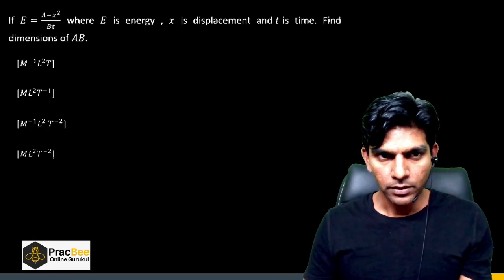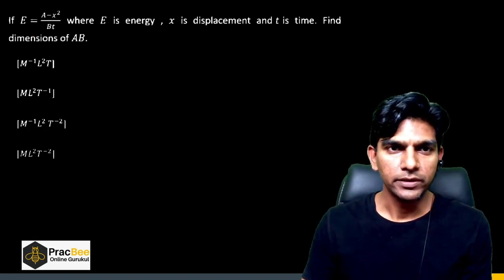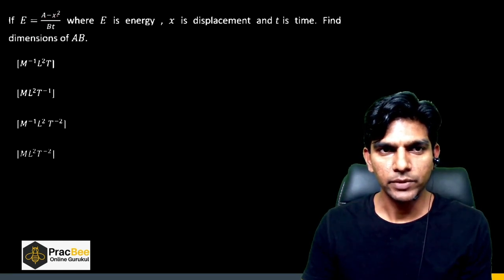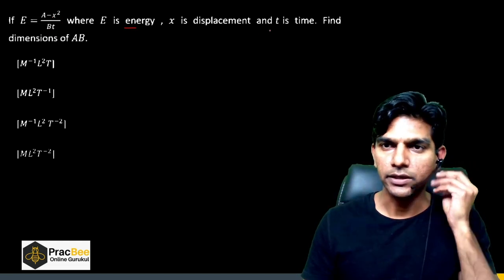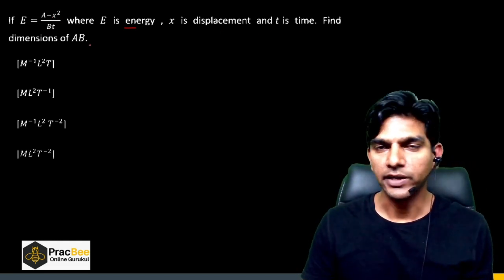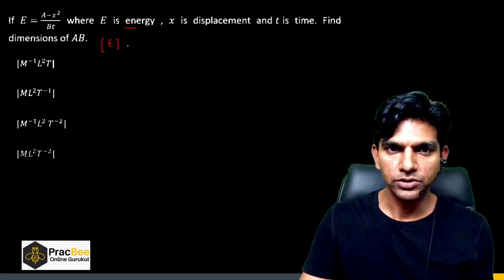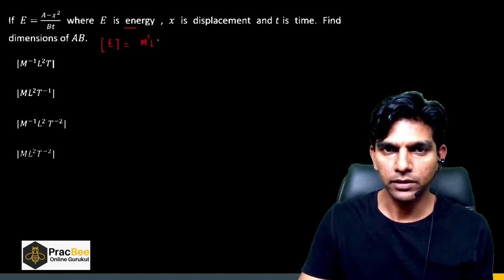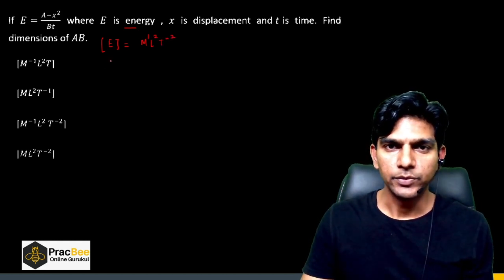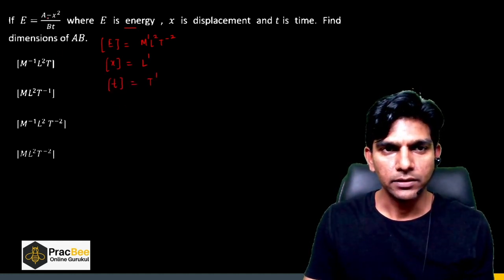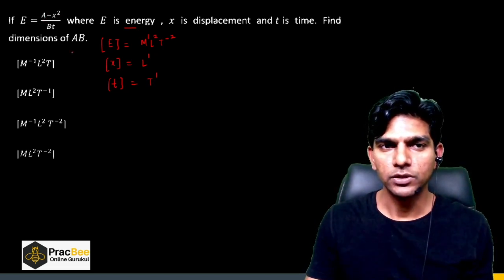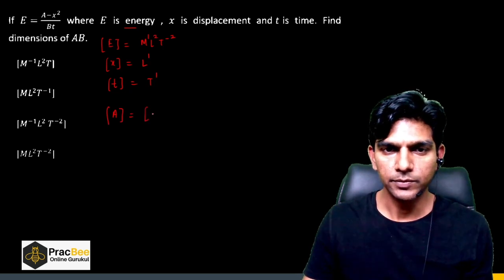The first question is from Units and Dimensions. We are given a physical quantity E = (a − x²) / (bt), where E is energy, x is displacement, and t is time. We need to find the dimension of ab. The dimension of energy is M¹L²T⁻², displacement is L¹, and time is T¹. Since x² is subtracted from a, the dimension of a must be the same as x², so the dimension of a is L².